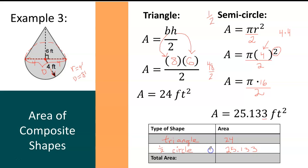And then to find the area of the entire composite shape, you have to add the area of the triangle and the semicircle. So 24 plus 25.133 is equal to 49.133. And I said that for all of these examples, we're going to round to the nearest tenth. So that would round to 49.1.